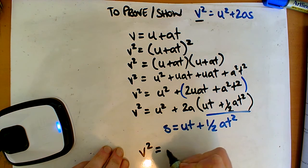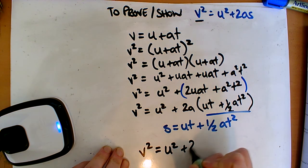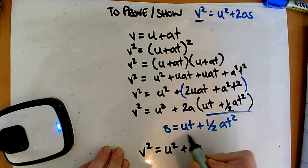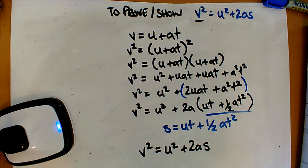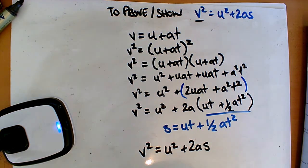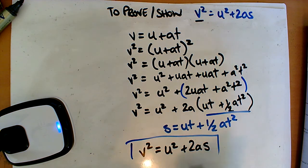So we've got our v² = u² + 2a, and everything in this bracket we've just shown is s. So v² = u² + 2as. Easy peasy.